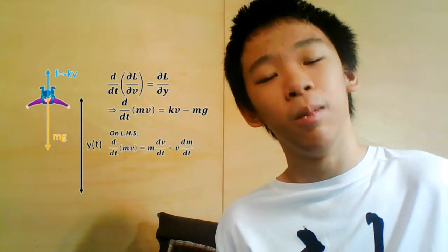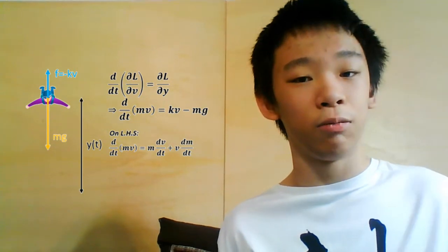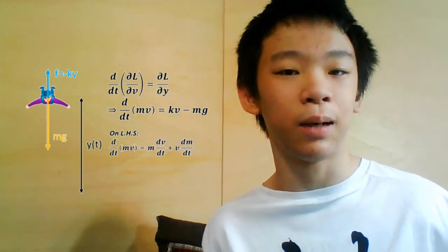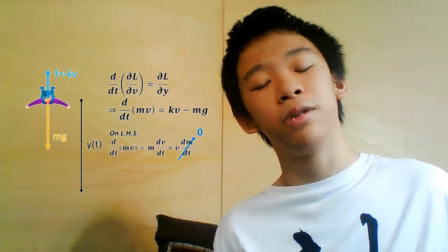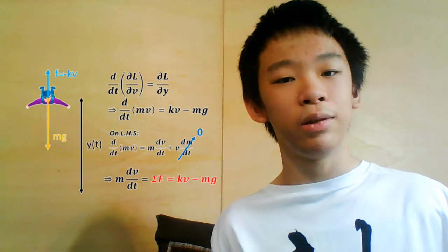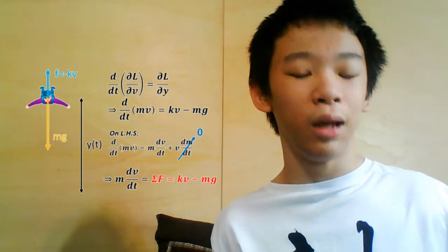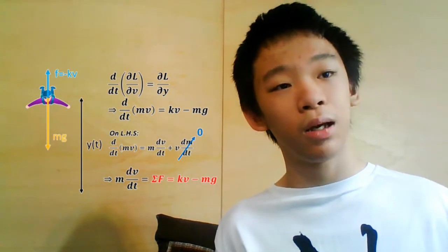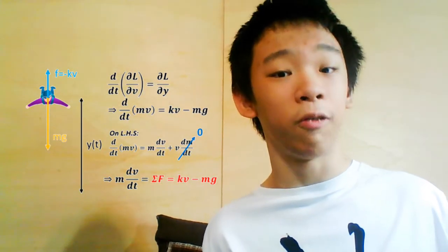Using the product rule, the time derivative of mass times velocity is the mass times the rate of change of velocity, plus the velocity times the rate of change of mass. Assuming that the mass stays constant — i.e., the rate of change of mass is zero — we get m dV/dt equals kV minus mg. Simplifying, the net force is kV minus mg, exactly the same differential equation obtained earlier using force analysis.